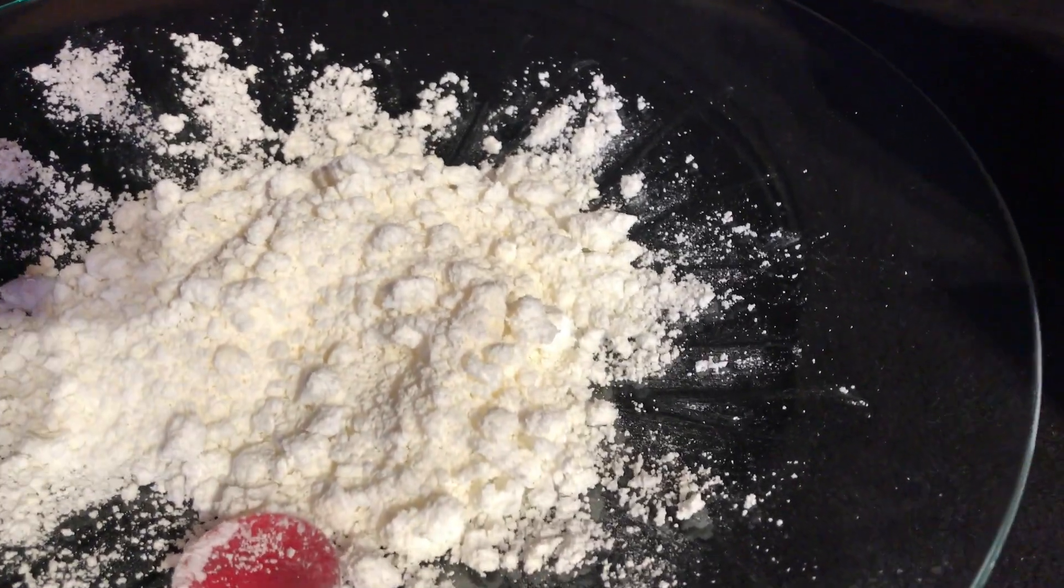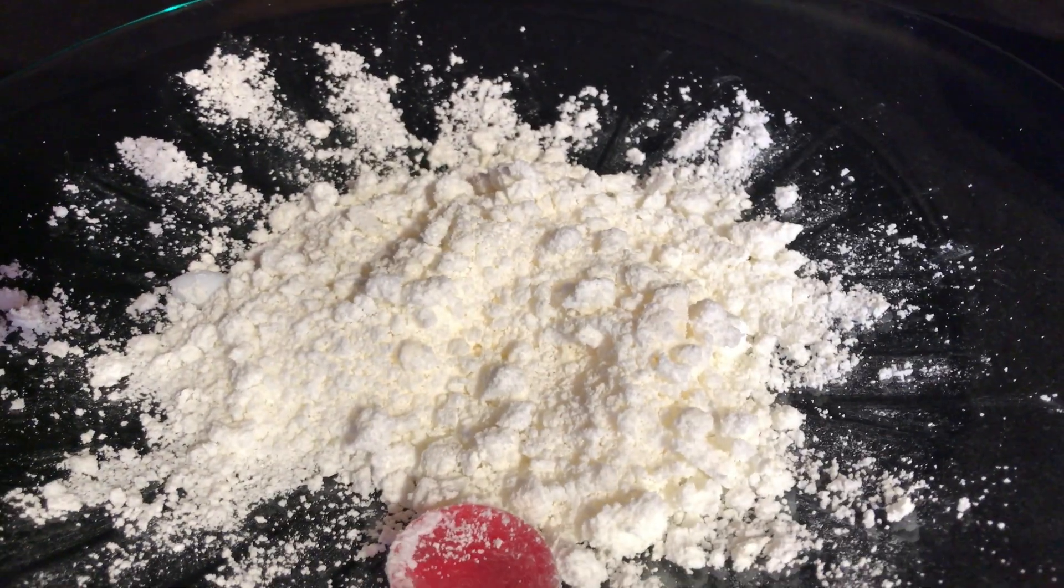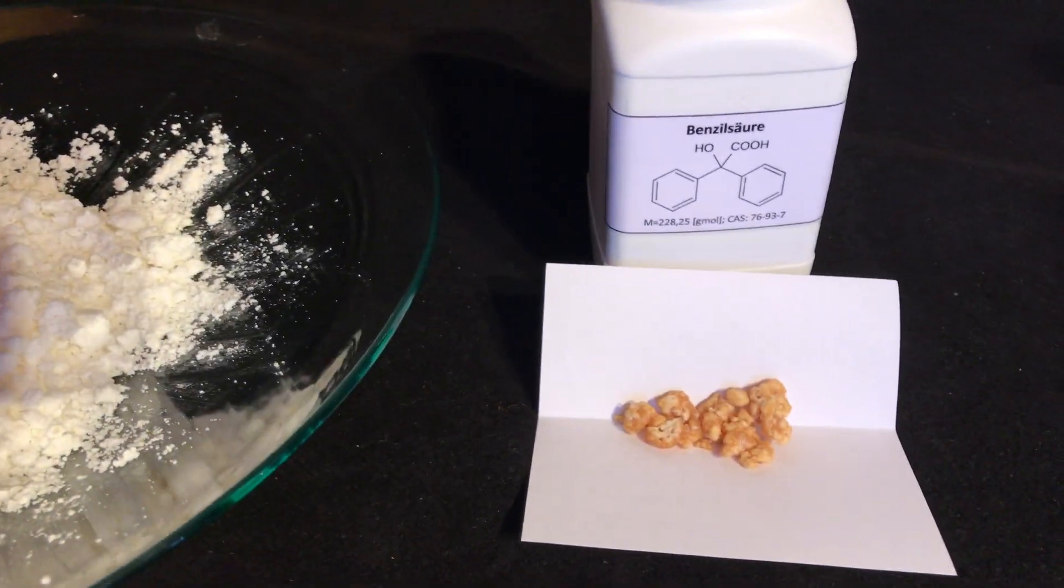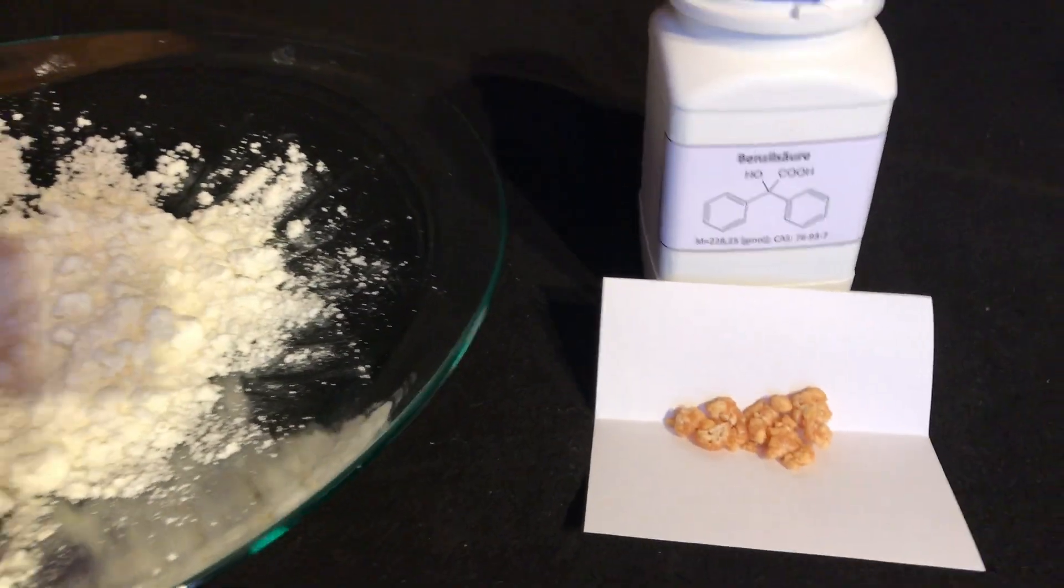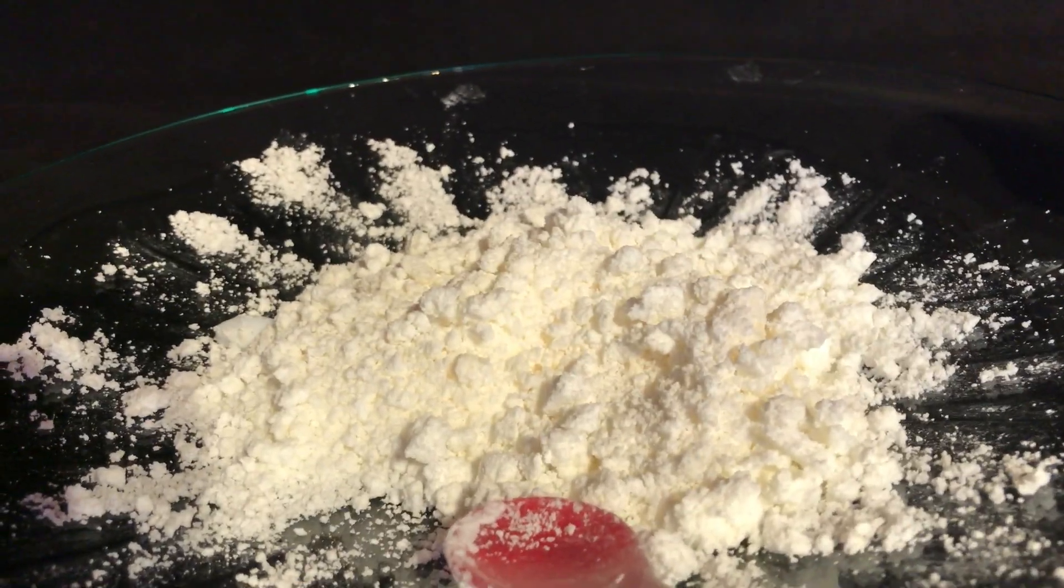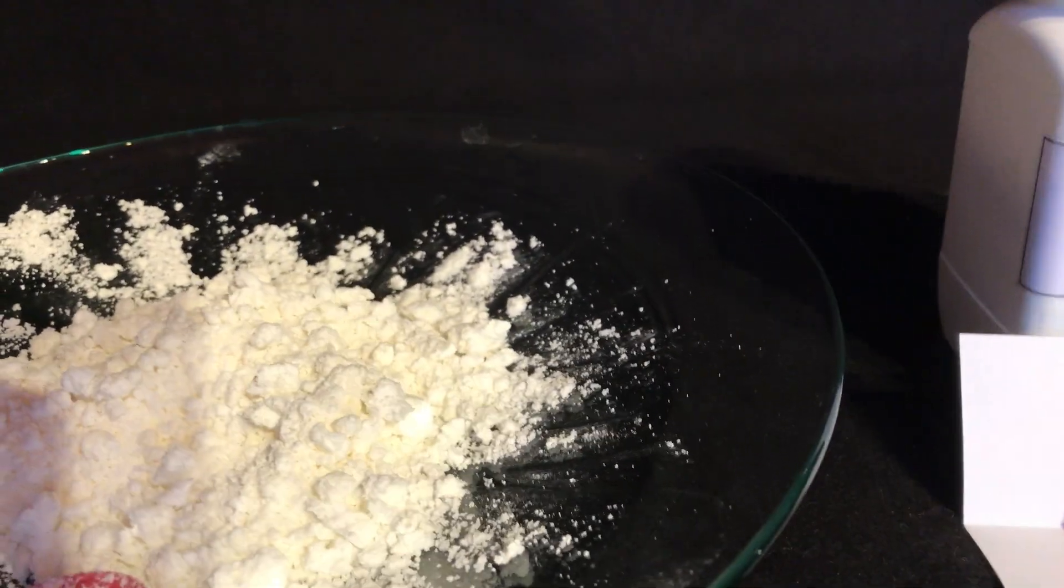Today I'm going to show you two methods to make benzoic acid. One is the classic method using benzil, and the second uses benzoin and potassium bromate. Do not repeat anything you see here at home because I'm using dangerous reagents and I don't want you to get hurt.